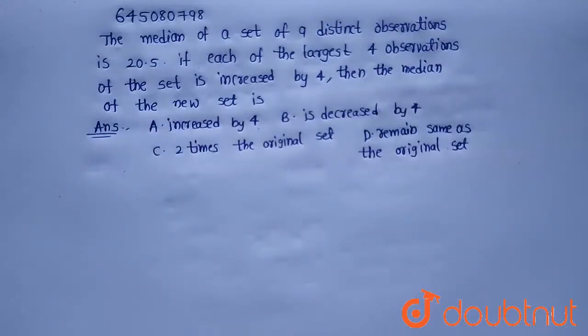Hello everyone. Today our question is: the median of a set of 9 distinct observations is 20.5. If each of the largest 4 observations of the set is increased by 4, then the median of the new set is.